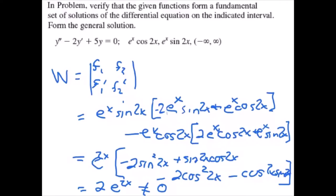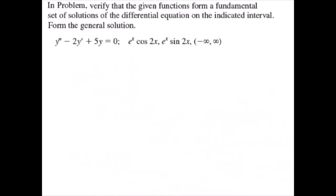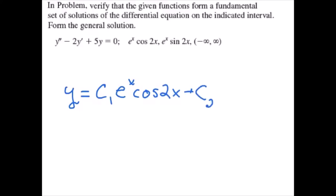So we can write the general solution to the equation as y equals c1 times e to the x cosine 2x plus c2 times e to the x sine 2x.